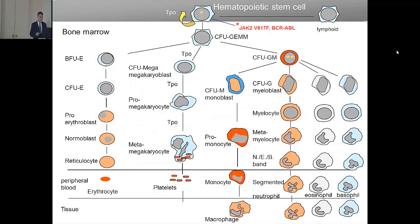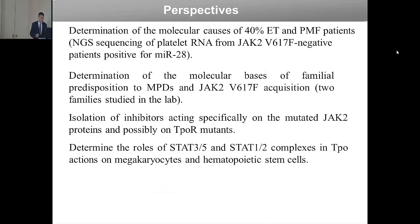When a stem cell continues to feed into this lineage and a more advanced progenitor like a CFU-GM transforms, it leads to blast proliferation and a stop in differentiation. There is now a big overlap between severe myelofibrosis and myelodysplasia, where we have a block in differentiation, and acute leukemia where we also have extensive proliferation.